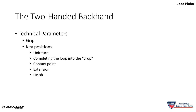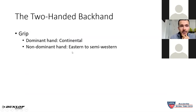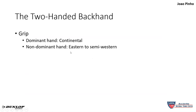Now let's go to the two-handed backhand. Same concept — starting with the grip, then going to key positions. For the grip, there are many combinations, but if you look at the best two-handers in the world, more often than not you'll find the dominant hand on continental and the non-dominant hand on either Eastern or semi-Western.